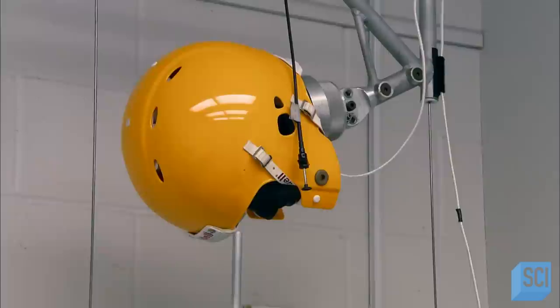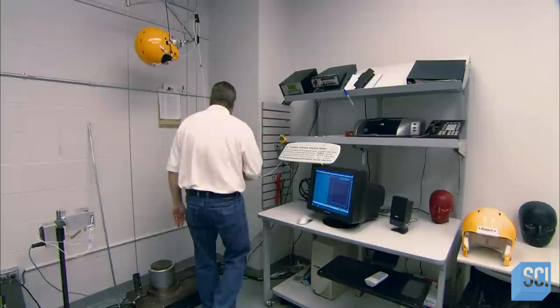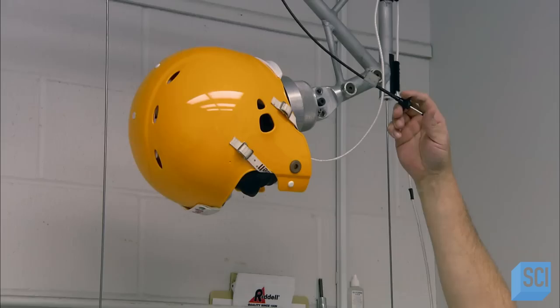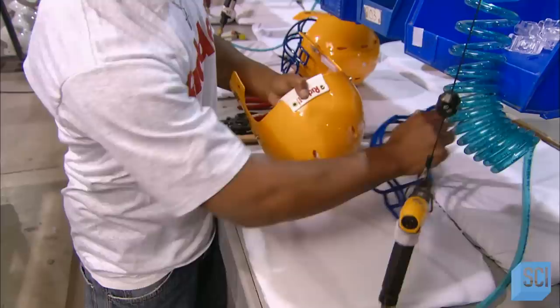A helmet from each production run undergoes an impact test. It's fitted on a head-shaped form equipped with sensors, which are carefully calibrated. The technician presses a button and the helmeted head falls. This mimics the effect of a player's head hitting the ground during a tackle. The computer then measures the force of the impact on the head.